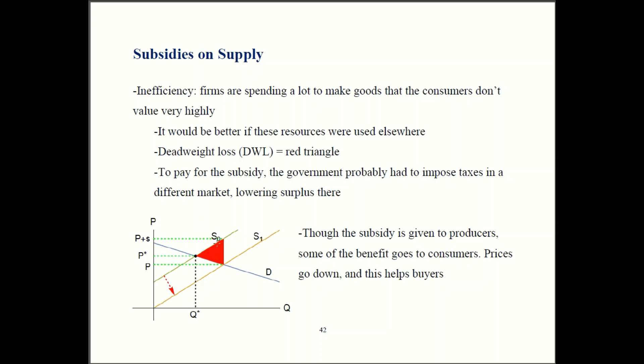They're spending more to make those goods than consumers think they're worth, and that's this red deadweight loss triangle. It comes from the gap between supply and demand, and it goes out until the new supply curve meets demand — that's the new quantity, which is the total amount of goods being produced.